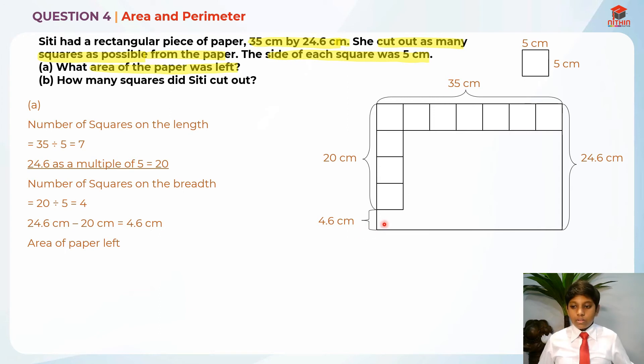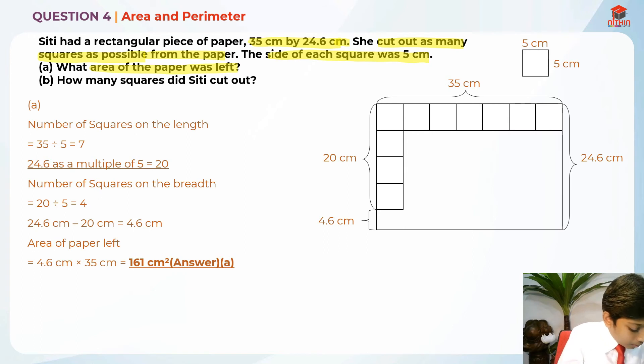So the area of paper left is actually 4.6 cm times 35 cm, which is 161 cm squared. This is because when we have 4.6 cm here, we know that the rest of the squares will be filled up over here. So this is basically the area of the paper left.